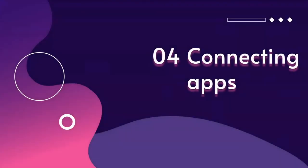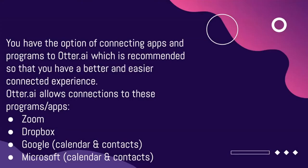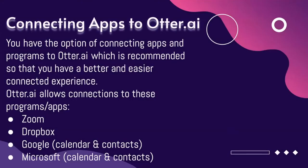Connecting apps: you have the option of connecting apps and programs to Otter.ai, which is recommended so that you have a better and easier connected experience. Otter.ai allows connections to programs and apps such as Zoom, Dropbox, Google Calendar and Contacts, and Microsoft Calendar and Contacts.